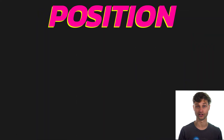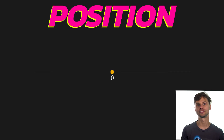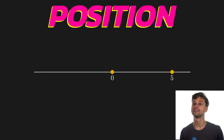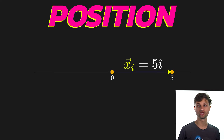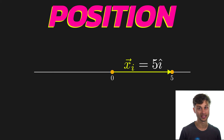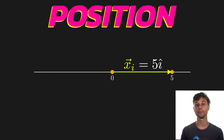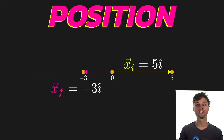So the first building block is position. Position is a vector — it is the directed distance away from the origin, which we mark with a zero. If we take a look at the number line here and say that I am placed at the number five, that means my position is 5 î, since position is a vector and I need to include my unit vector notation. If you need a primer on vectors, you can see that episode, but for now we can just say that my position is at 5 î.